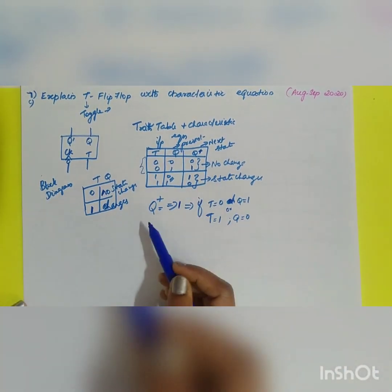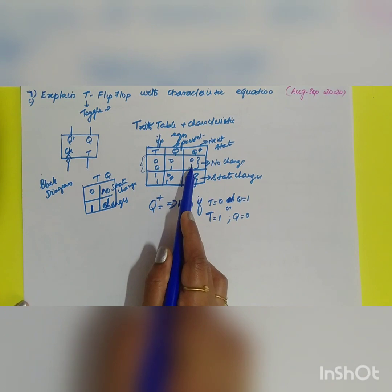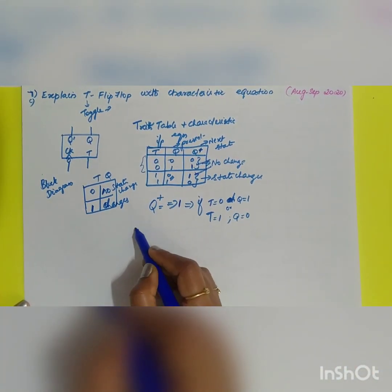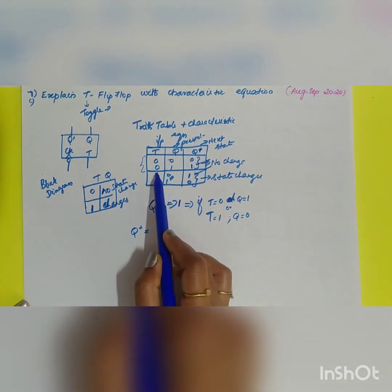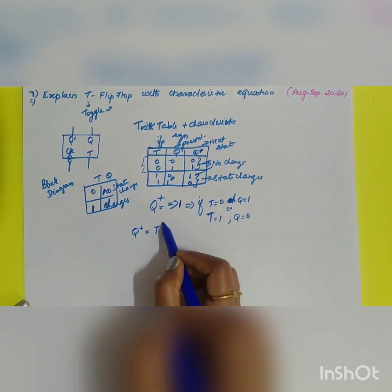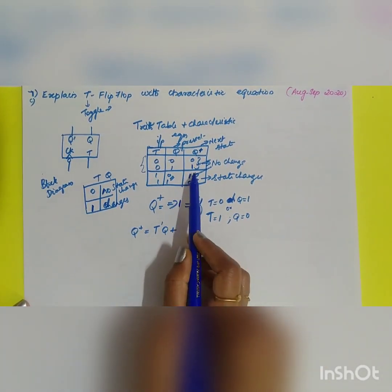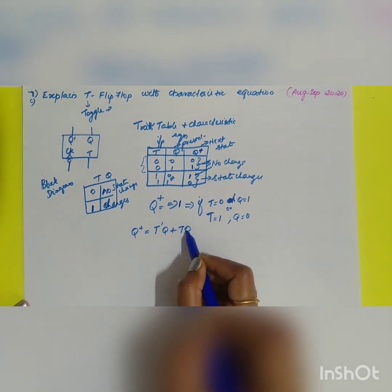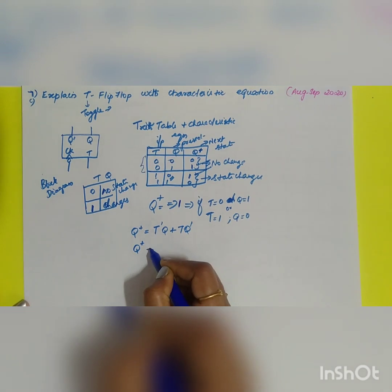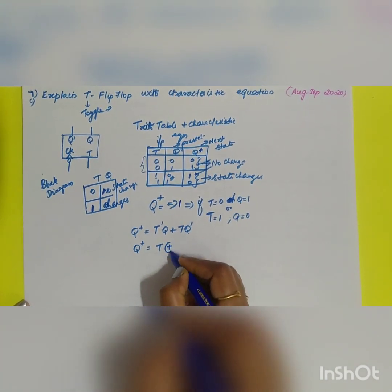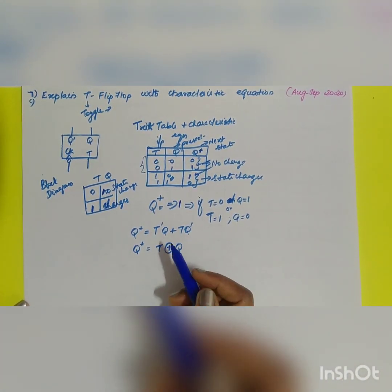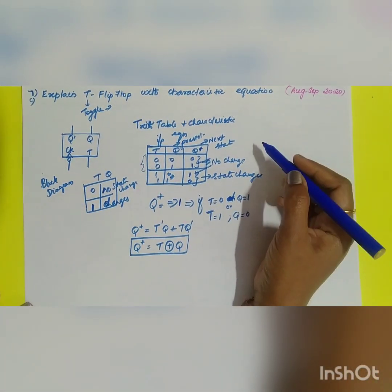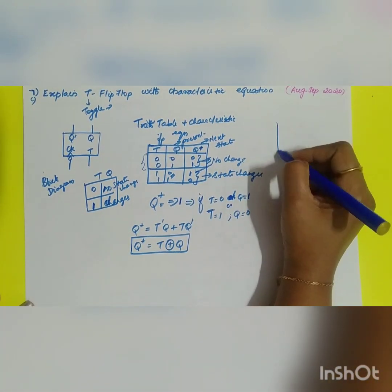From this, we can find the characteristic equation. There are two ones in the table: one gives T'Q and the other gives TQ'. Combining these: Q+ = T'Q + TQ', which is nothing but the XOR gate. So the characteristic equation is Q+ = T ⊕ Q.